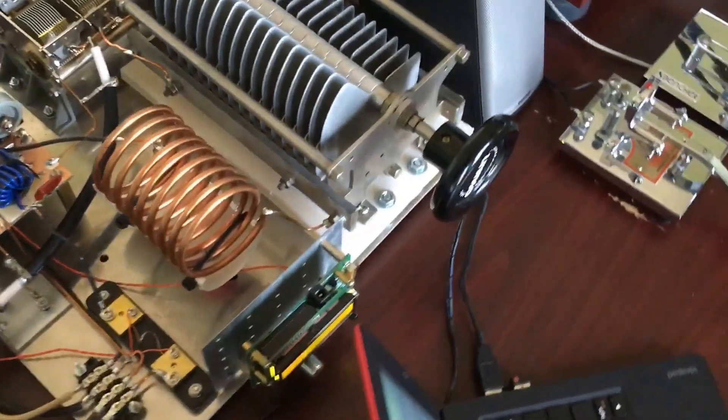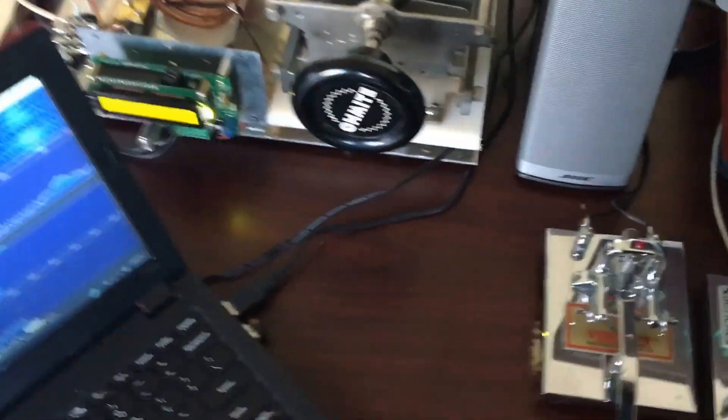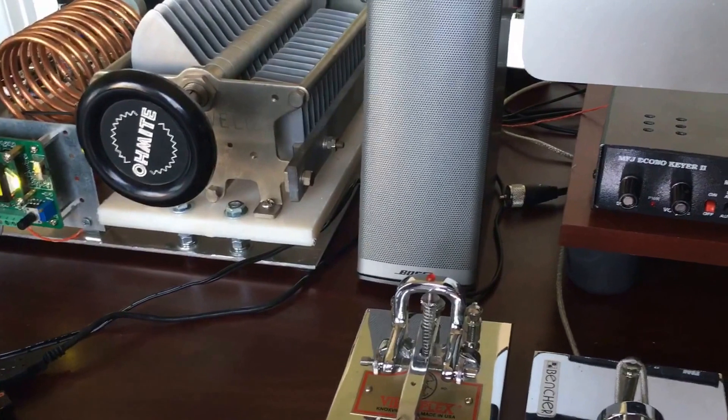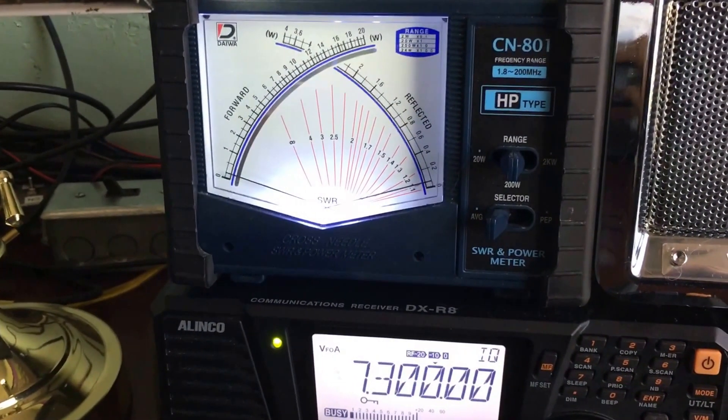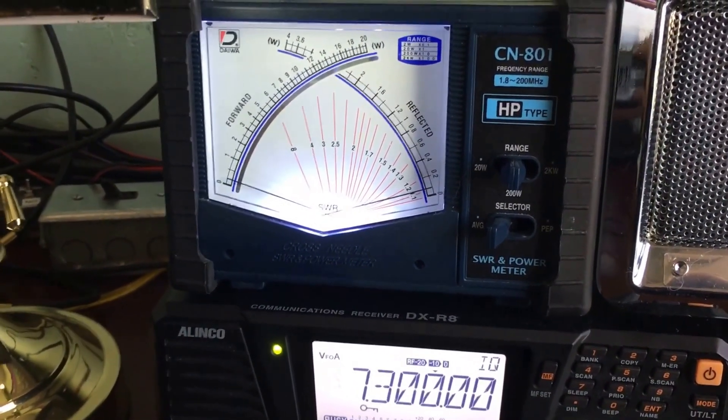So let's take a first spin. It puts out 50 watts carrier and around 200 watts peak. So let me turn this on and I've got the wattmeter over here if you can see that. So we're on the 200 watt scale.